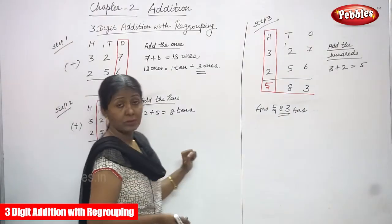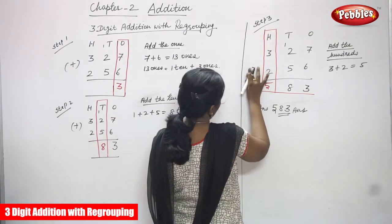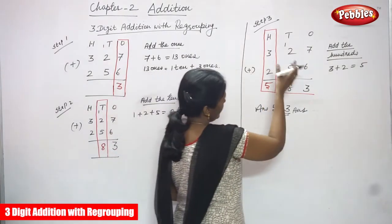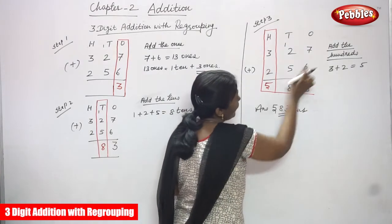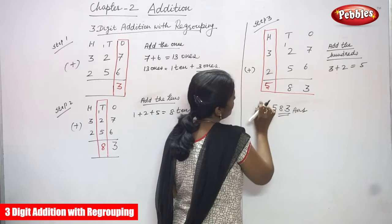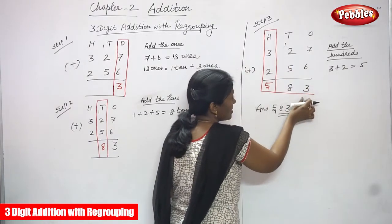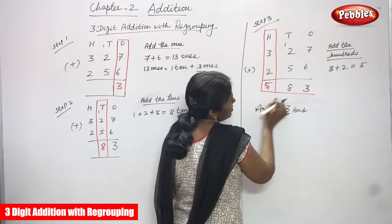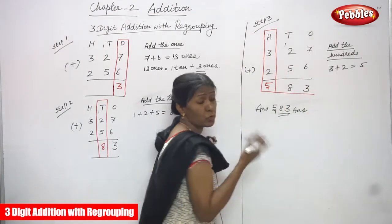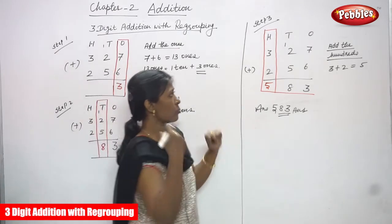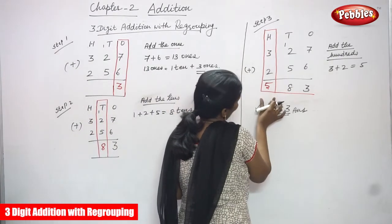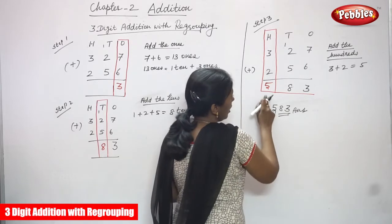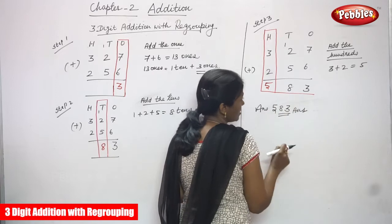Step three — this is also addition. I've written the number according to place value: hundreds, tens, and ones. Now I concentrate only on the hundreds. There is no carryover, so I just add three plus two. Three in the mind, two on the finger — after three: four and five. I highlight the hundreds place in red. The answer is 583: five hundreds, eight tens, and three ones.